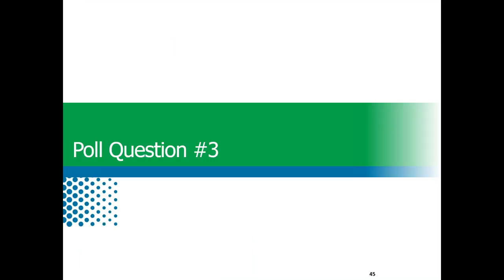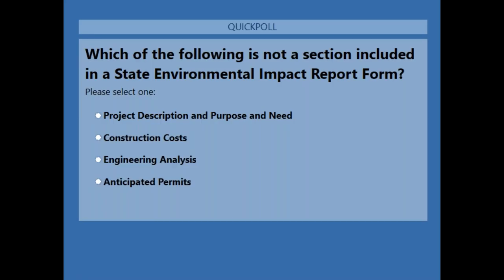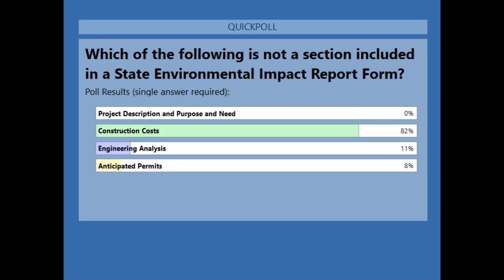Let's wrap up this lesson with a poll question. Which of the following is not a section included in a state environmental impact report form? It looks like most of you said construction costs — that is correct.